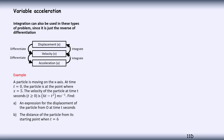We've got our diagram back, and we can move from displacement to velocity by differentiating with respect to t, and velocity to acceleration by differentiating again. If we want to go the other way, acceleration to velocity, then we do the reverse of differentiation, which is integration. And if we want to find displacement, we integrate a second time.